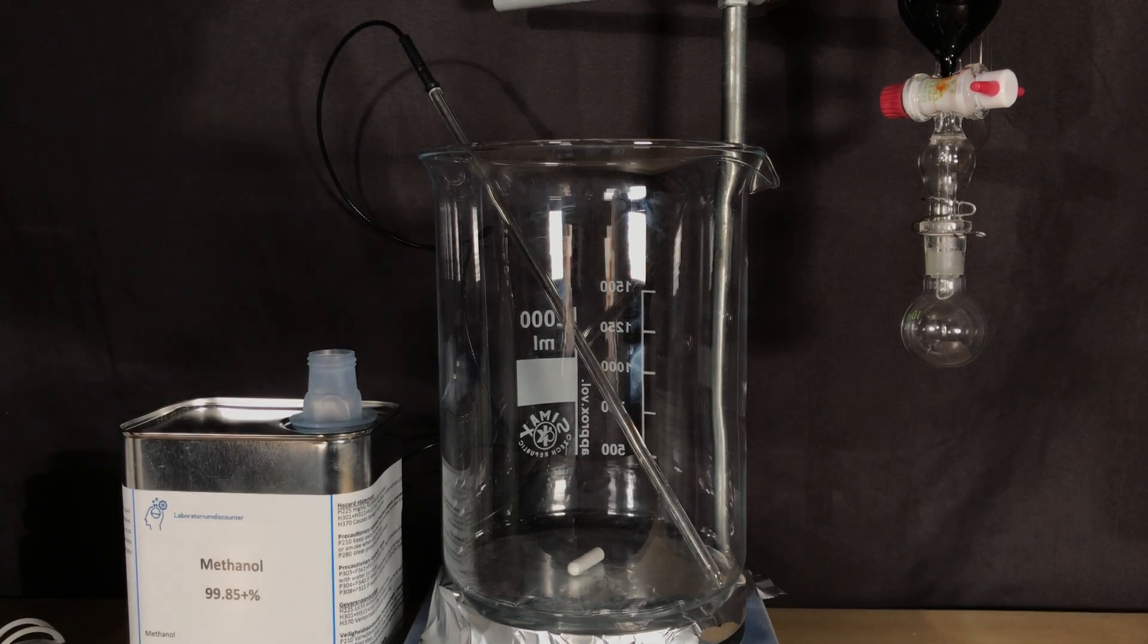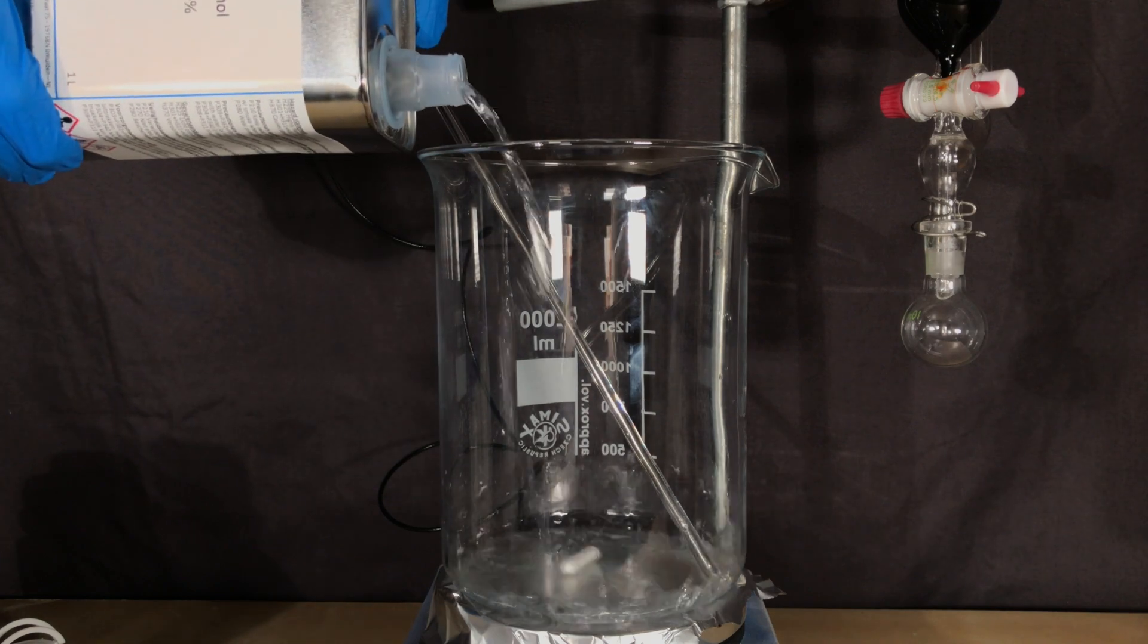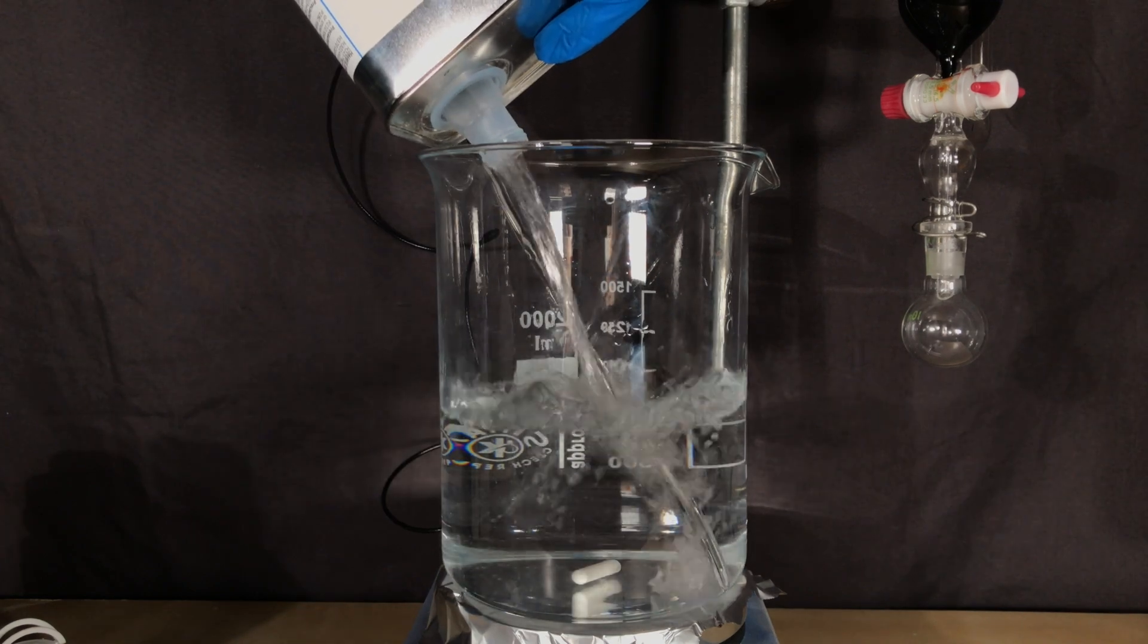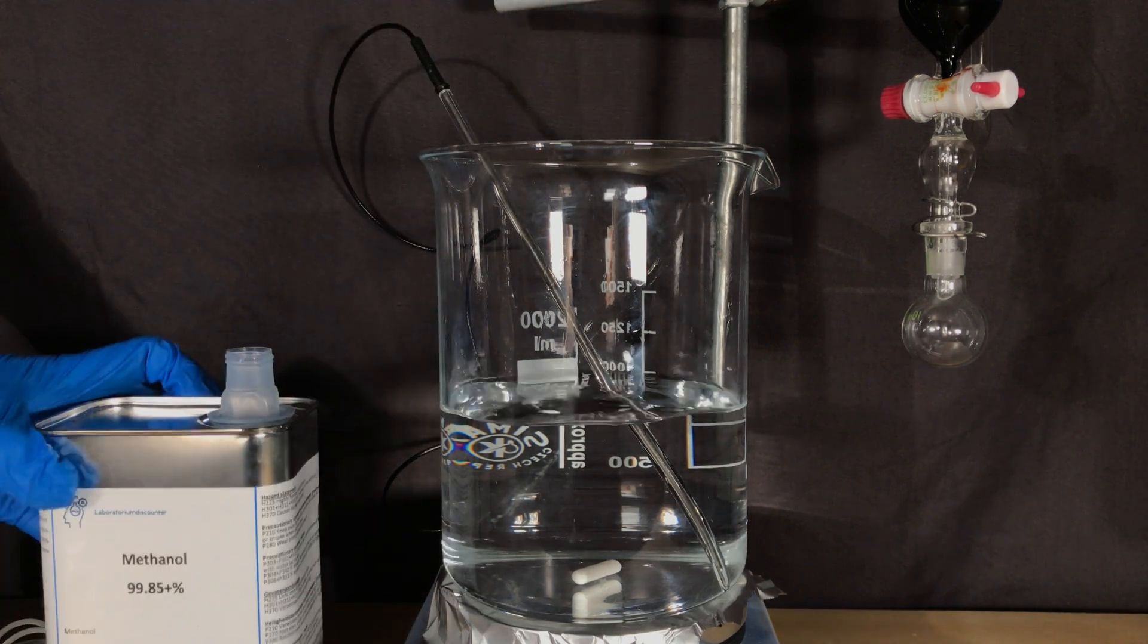As a solvent for today's reaction we are going to use methanol. It is going to dissolve the vanillin and methanol is also quite inert towards bromine. Methanol should be handled with great care because it's flammable and also quite toxic.